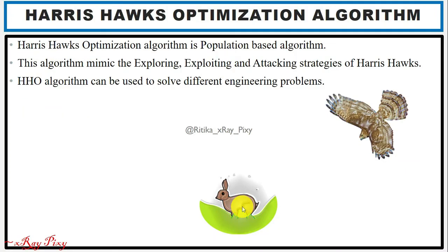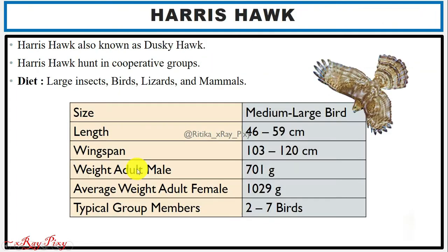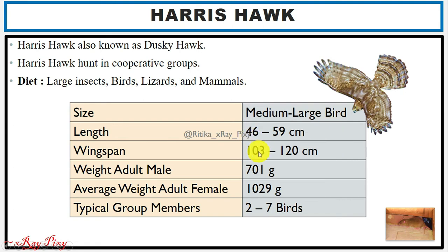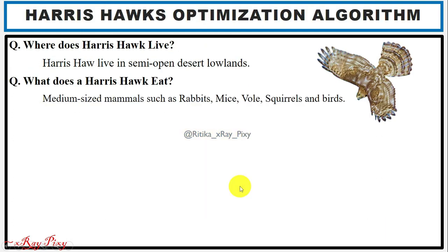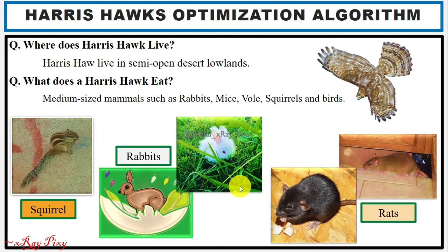Harris Hawks Optimization is a nature-inspired, population-based algorithm that mimics the different searching and attacking strategies used by Harris Hawks in real life, and can be used to solve different engineering problems. Harris Hawks are medium-to-large birds, also known as dusky hawks. They hunt in cooperative groups of 2 to 7 birds. Their wingspan is 103 to 120 cm, length is 46 to 59 cm. They live in semi-open desert and eat medium-sized mammals such as rabbits, mice, and small birds.